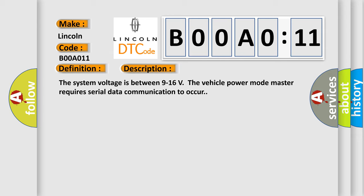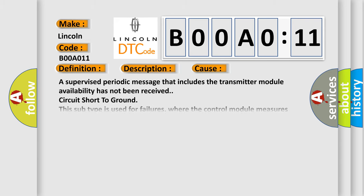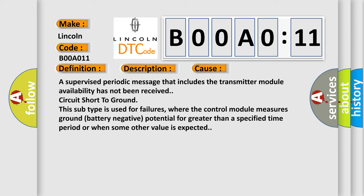This diagnostic error occurs most often in these cases. A supervised periodic message that includes the transmitter module availability has not been received. Circuit short to ground—this subtype is used for failures where the control module measures ground battery negative potential for greater than a specified time period or when some other value is expected.